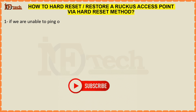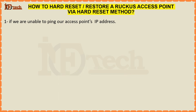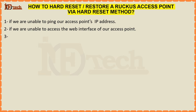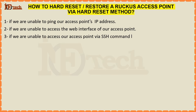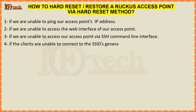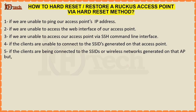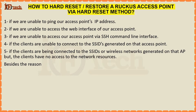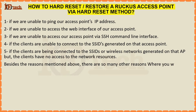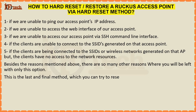Number 1 - If we are unable to ping our access point's IP address. Number 2 - If we are unable to access the web interface of our access point. Number 3 - If we are unable to access our access point via SSH Command Line Interface. Number 4 - If the clients are unable to connect to the SSIDs generated on that access point. Number 5 - If the clients are connected to the SSIDs or wireless networks generated on that AP but the clients have no access to the network resources. Besides the reasons mentioned above, there are many other reasons where you will be left with only this option. This is the last and final method which you can try to reset your access point.